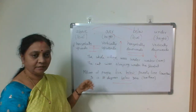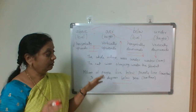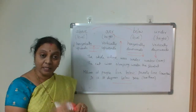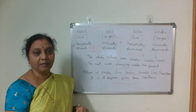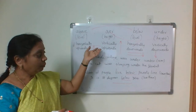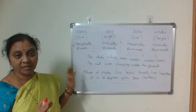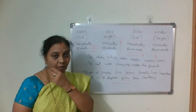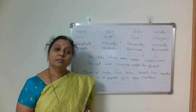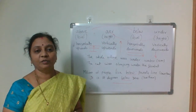Coming to 'under': it talks about vertically downwards and height. For example: 'The whole village was under water — completely covered.' 'The cat was sleeping under the blanket' or 'The cat was under the table.' So 'over' and 'under' are vertically upwards and vertically downwards — that is the major difference among these four prepositions of place. With this I will wind up the session. I will be back soon and we will continue the prepositions. Thank you for watching.